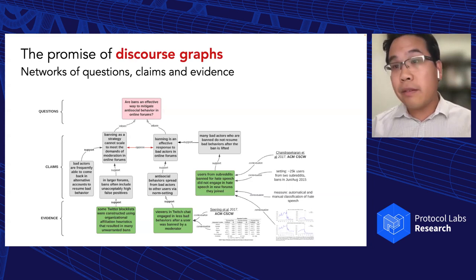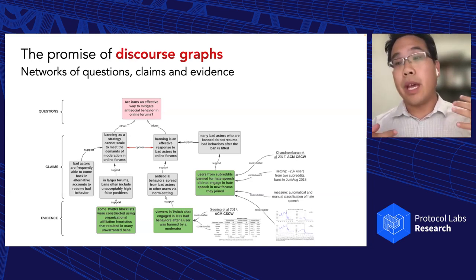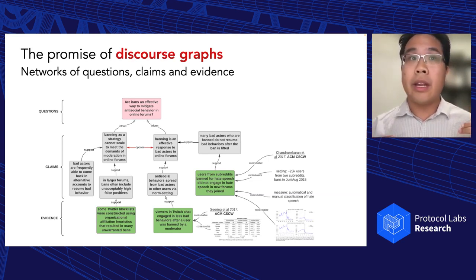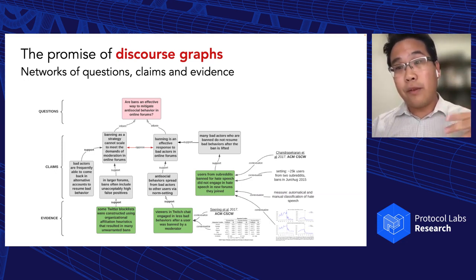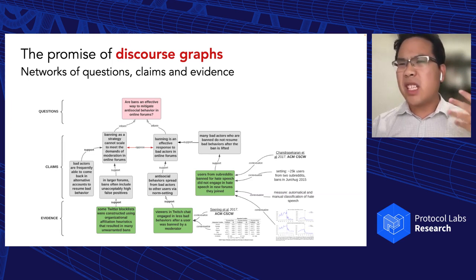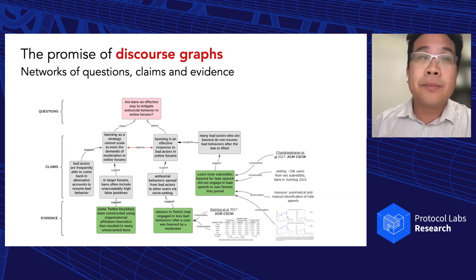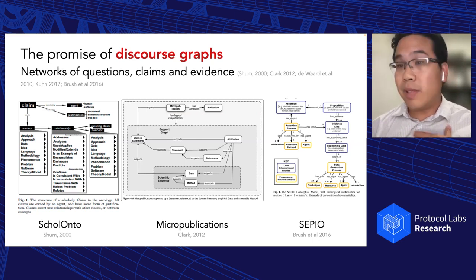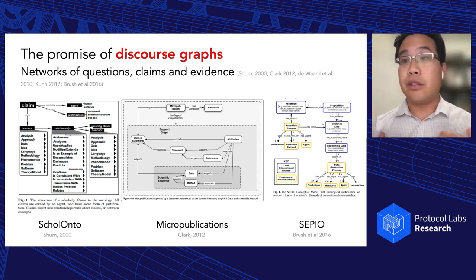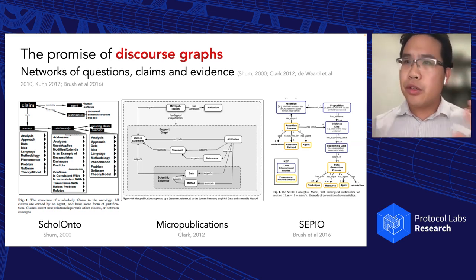Underneath those claims we have evidence — particular results that are supporting or opposing them. This is a pretty intuitive model; we think about how people talk about invalid papers, complaining that a paper makes claims not supported by its data. This core distinction between claims and evidence is not my invention — it's been talked about for decades. We have decades of literature on standards for how to formally represent a discourse graph, including SKOS ontologies, micro publications, and CPO, among many mature and well-thought-out standards.